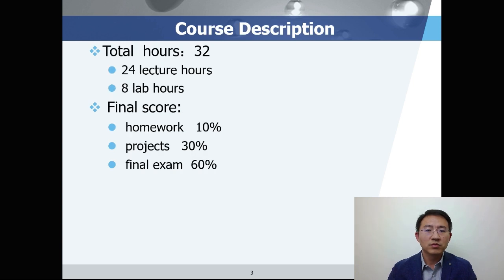The course total includes 32 hours, 24 hours for the lectures and 8 hours for the labs. The final score includes mainly three parts: the homework takes 10%, the projects 30%, and the final exam 60%.